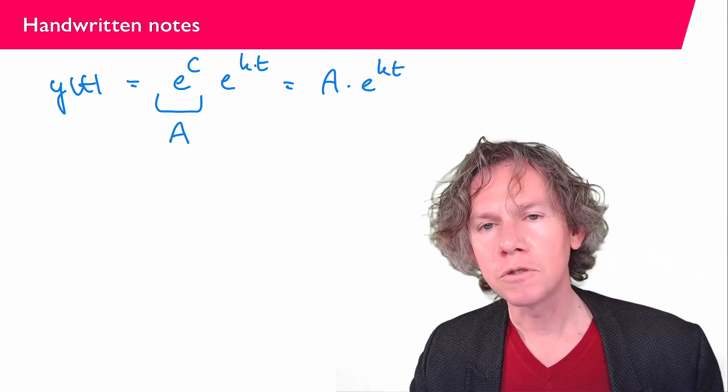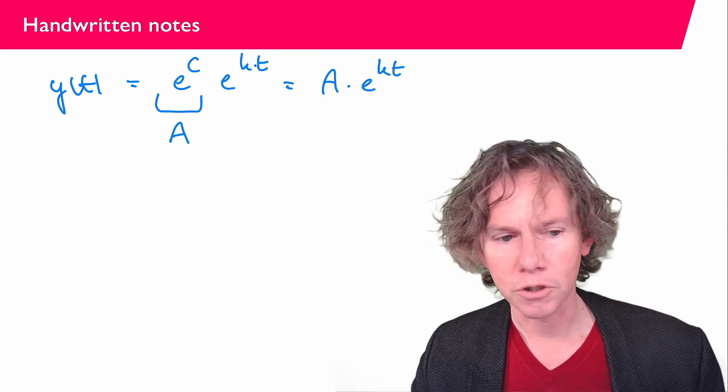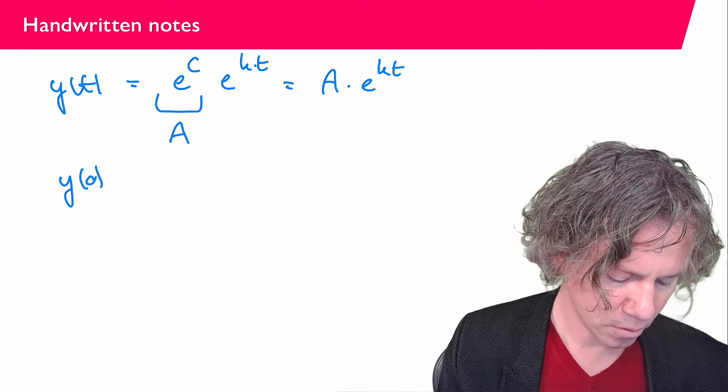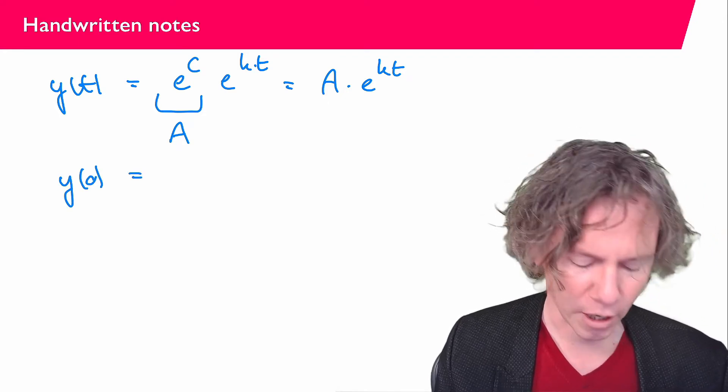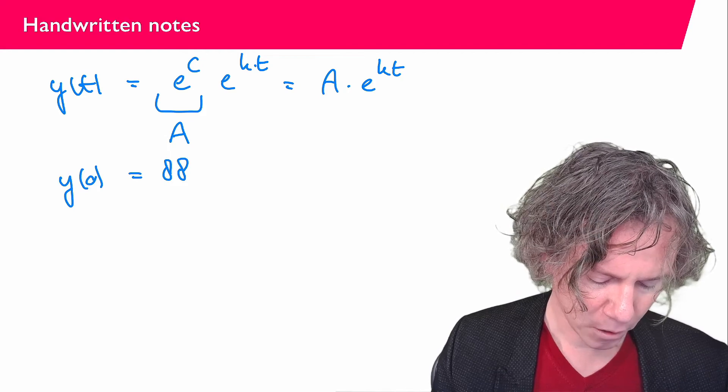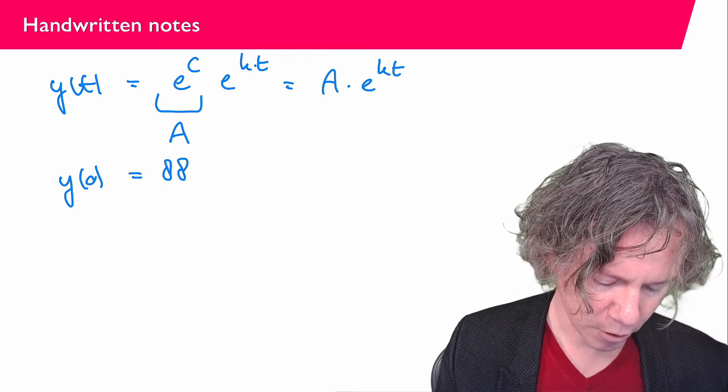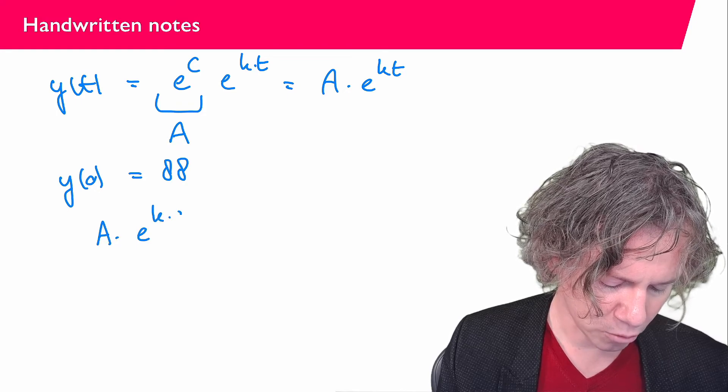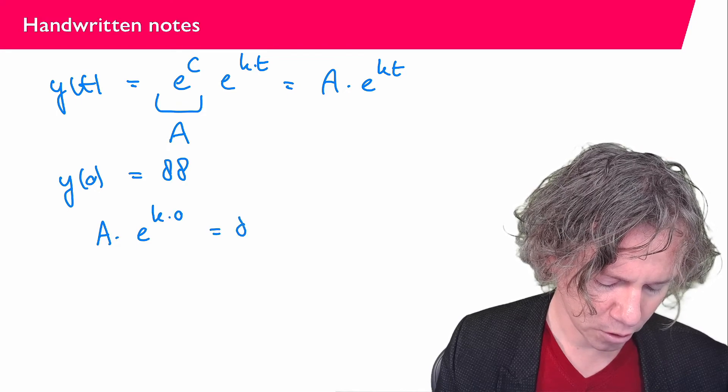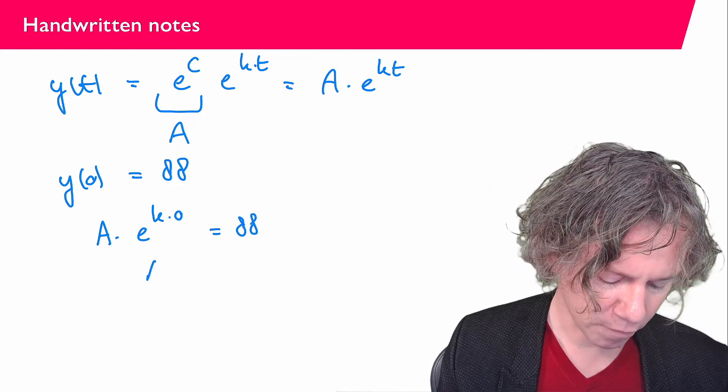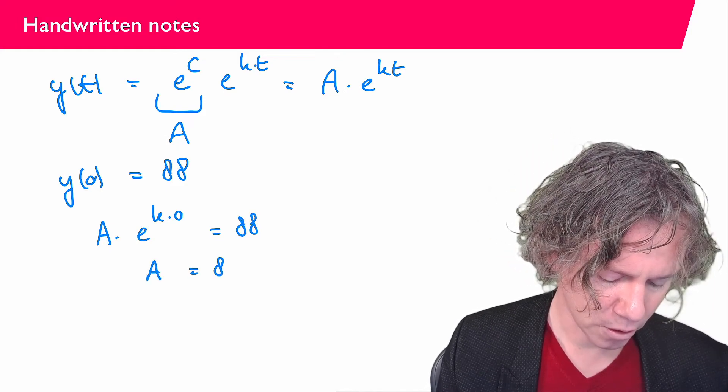Then finally, what we need to do is use the initial condition. It was given that y(0), the initial amount of material that we have, equals 88. So what we have now is that apparently a·e^(k·0) = 88. e^0 = 1, so we have that a = 88.